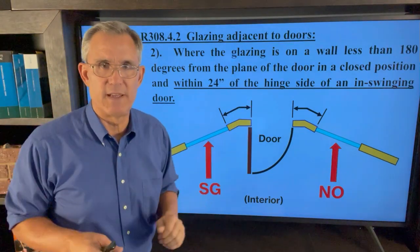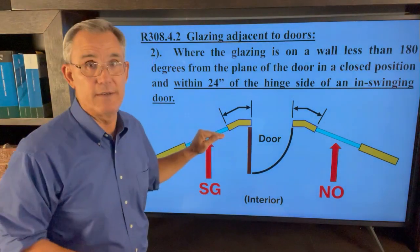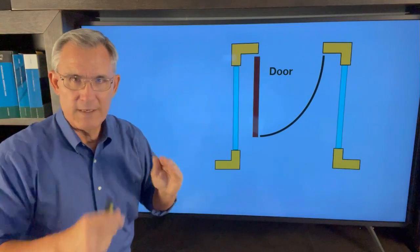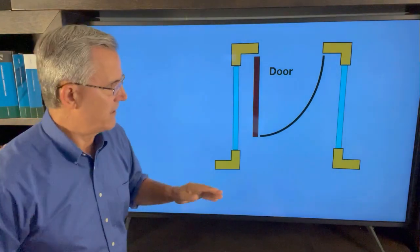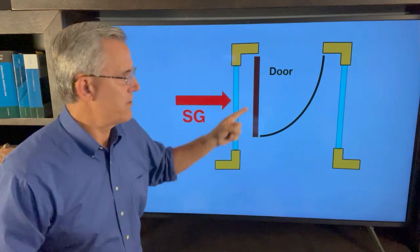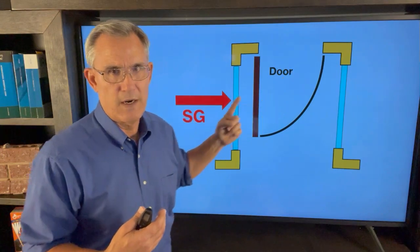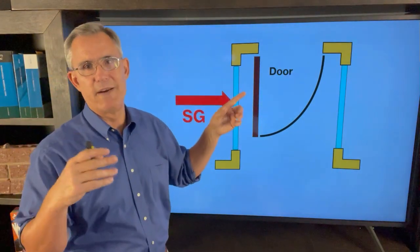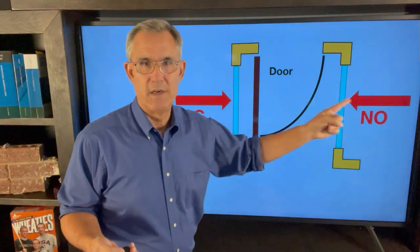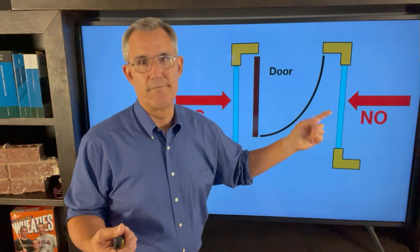So: straight line (180 degrees), both sides require safety glass. Anything under 180 degrees, look for the hinge side — if it's less than 24 inches, that's the one that needs it; the other side doesn't. Here's another example with a 90-degree wall. If you're calling the kids in for dinner, you go to the front door, the kids are racing in and barge through the door while you're standing right there — you get hit by the door and go through that window. The code writers want that window to be safety glass for that reason. But the opposite side would not require safety glass because it's not the hinge side of an in-swinging door.